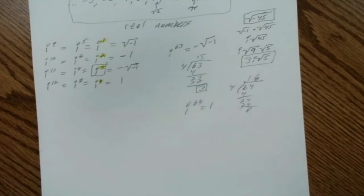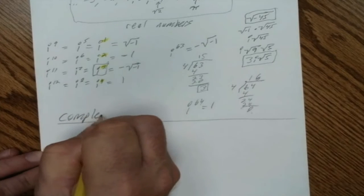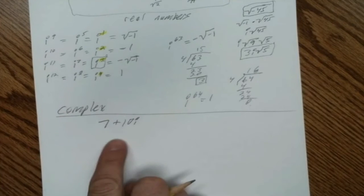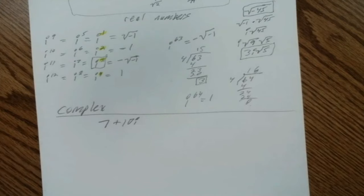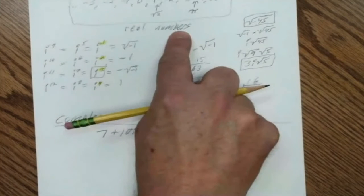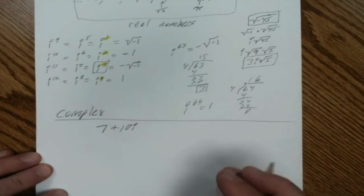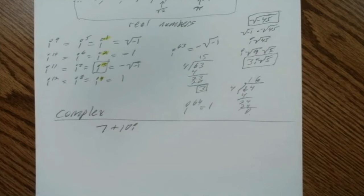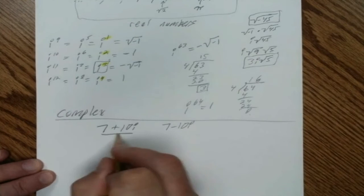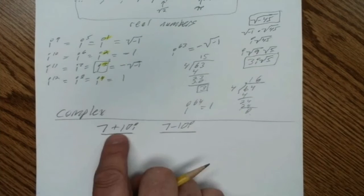Using i, we call these complex numbers — outside the real number system. A number like 7 plus 10i is a complex number. Imaginary numbers make up one part of a complex number, and the other part is a real number. So we always have a real part and an imaginary part. There's also something called the conjugate: the conjugate of 7 plus 10i would be 7 minus 10i. The conjugate uses the same numbers with the opposite sign.